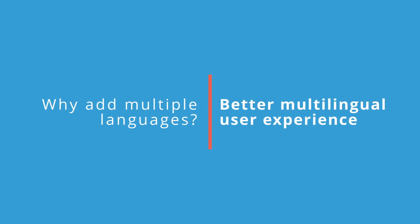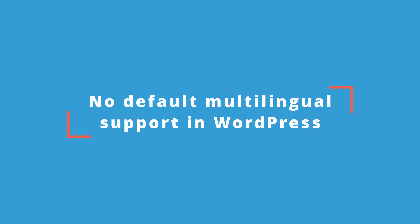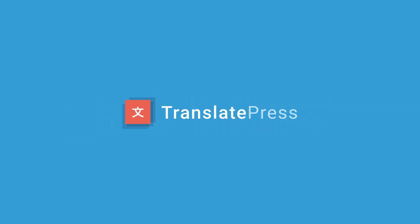Also, offering your site in different languages helps you create a better user experience for your multilingual visitors, as the vast majority of people prefer to browse websites in their native language whenever possible. But if you want to use multiple languages, you'll need some help because WordPress doesn't support multiple languages by default. That's where the TranslatePress plugin comes in — the solution that we think is the best for most WordPress users. So let's start with the installation process.